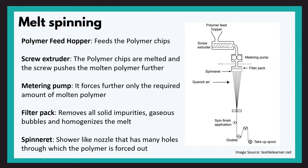The first part is the polymer feed hopper — the name itself explains its function. The polymer chips are fed into this part, which then feeds them to the screw extruder located right below it. The next part is the screw extruder, where the polymer chips are melted to the required viscosity and the screw pushes the polymer further into the spin pack. Next is the metering pump, which maintains a uniform output of molten polymer by forcing only the required amount ahead to maintain a uniform denier.